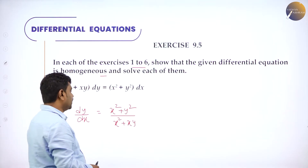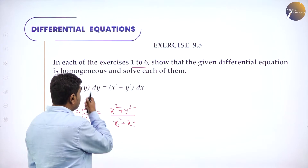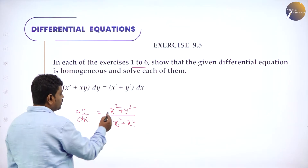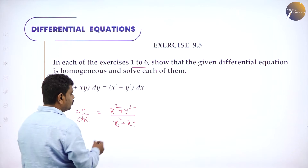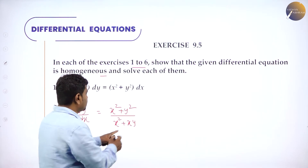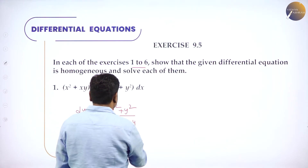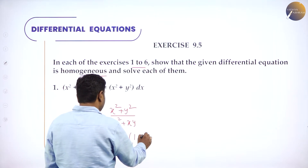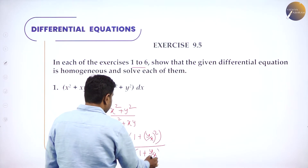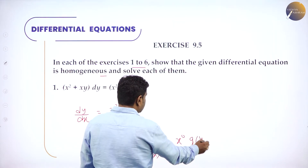You should take the highest degree term common. What is the highest degree term? x-squared. If I take x-squared common in the numerator, it becomes 1 plus (y/x) whole squared. Taking x-squared common in the denominator gives 1 plus y/x. So it is in the form x-power-n times g(y/x), therefore it is homogeneous.